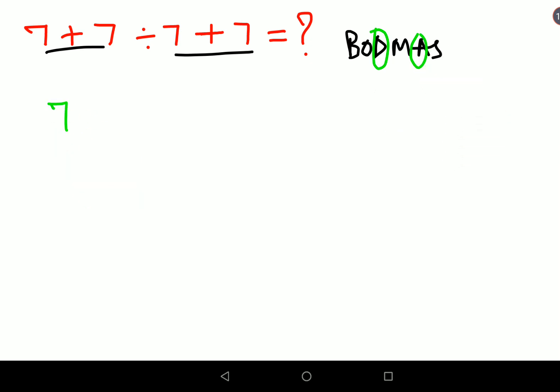Division first, so we'll have 7 plus as it is, then we do 7 divided by 7 gets you 1, plus 7. Now this is very easy: 7 plus 1 is getting you 8, 8 plus 7 gets you 15.